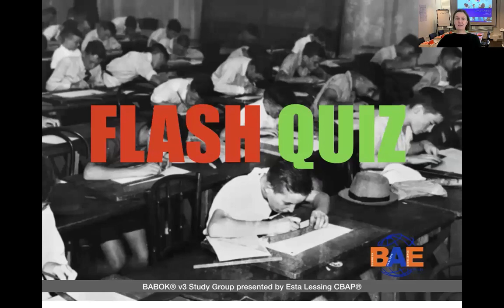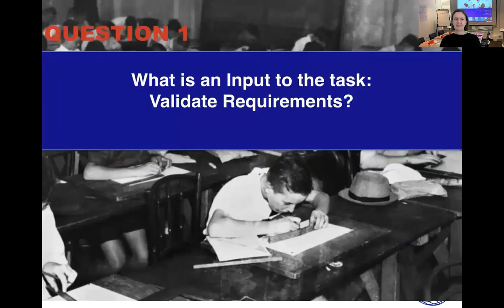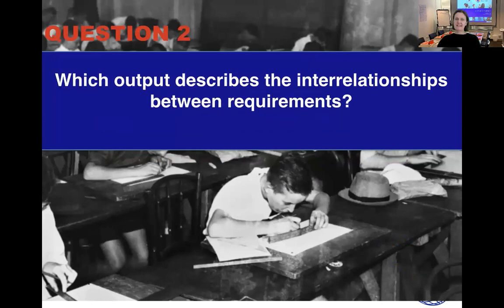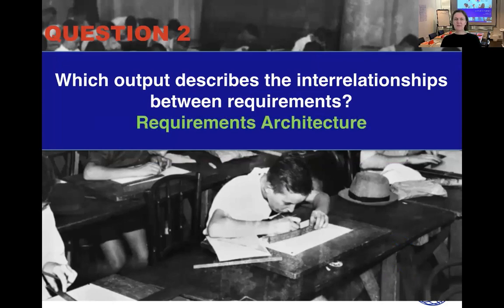Here's a quick flash quiz. First question: what is an input to the task validate requirements? Yes — it's requirements that are specified and modeled. Second question: which output describes the interrelationships between requirements? Yes — requirements architecture. Good work.